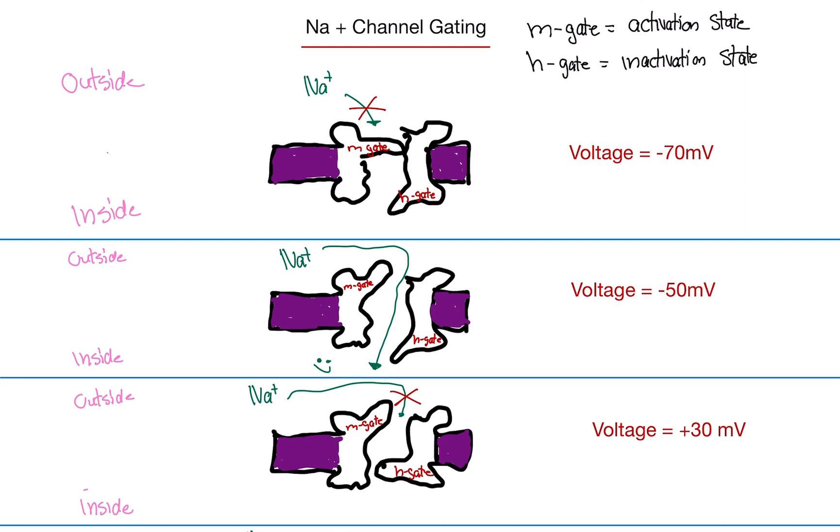But the actual way what the sodium channel looks like, it has two gates. It has the M gate and then the H gate. So the M gate is located towards the outside of the cell. So if you're saying this is the outside, this is the inside of the cell, the M gate is on the outside, towards the outside, and the H gate is towards the inside of the cell. There are two gates. The M gate is also known as the activation state, and the H gate is the inactivation state. I know that sounds gibberish and it makes no sense, but it is kind of confusing, but we're going to go over it slowly.